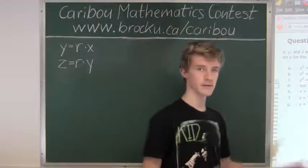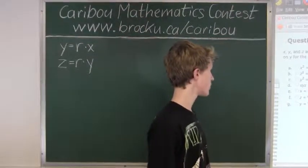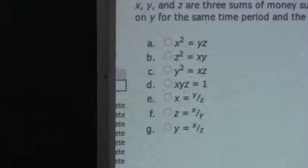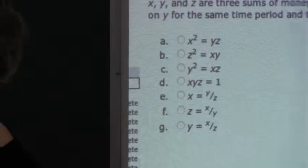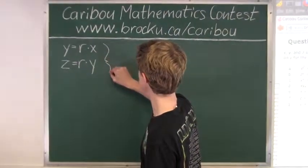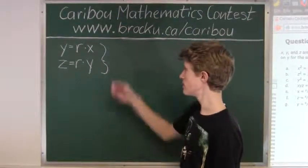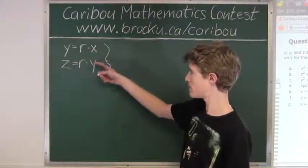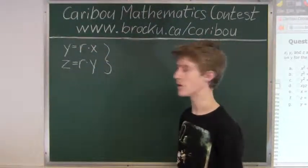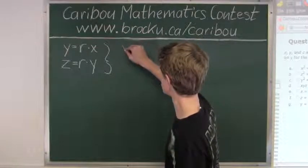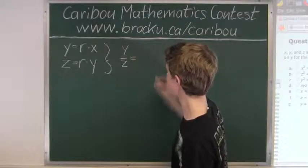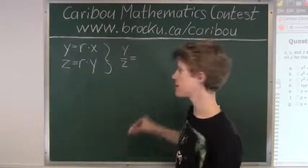As you can see from the options, there are only relations between X, Y, and Z. So that means for these two relations here, we want to get rid of R. The easiest way to do that is to divide relation 1 by relation 2. So R divided by R is 1, Y divided by Z is Y over Z, and X divided by Y is X over Y.